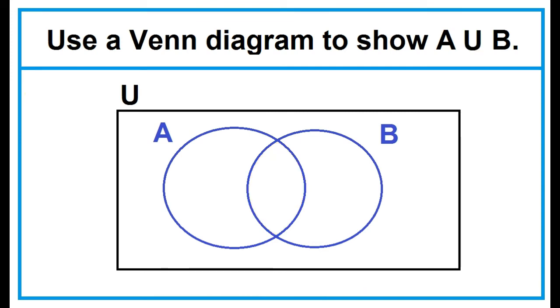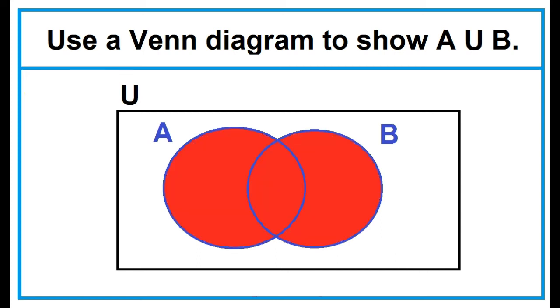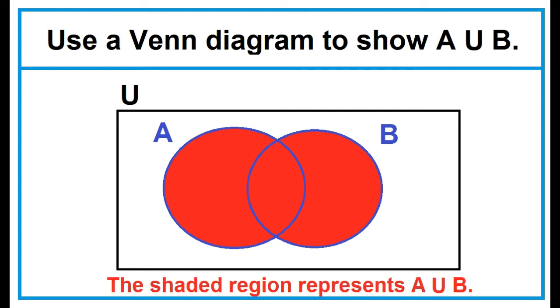Use a Venn diagram to show A union B. Shade circle A and circle B. The shaded region represents A union B.